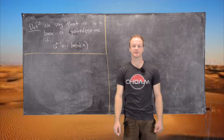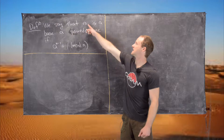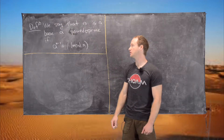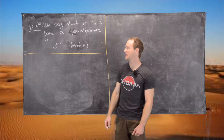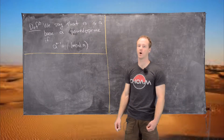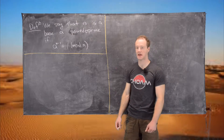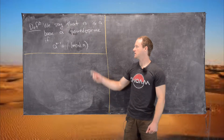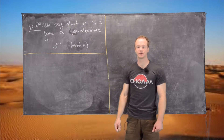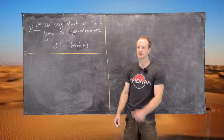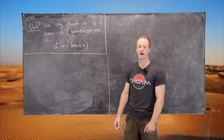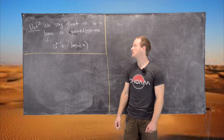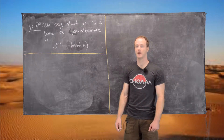That gives us this motivation: we say that n is a base-a pseudoprime if a to the n minus 1 is congruent to 1 mod n. It's called a pseudoprime because it acts like something having to do with Fermat's Little Theorem, but in fact it may not be a prime number.